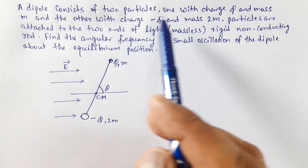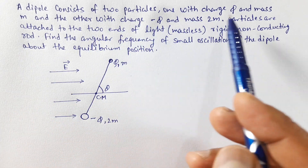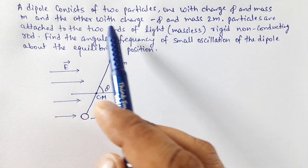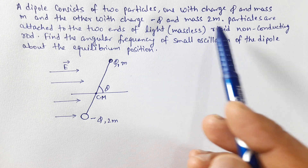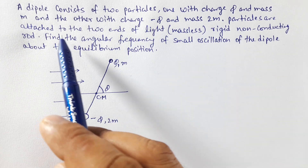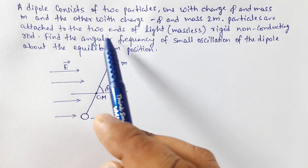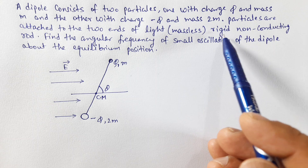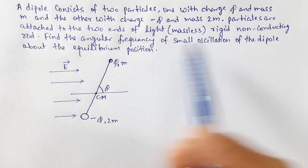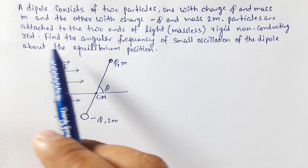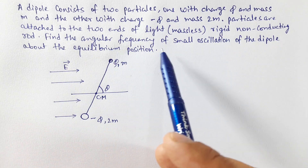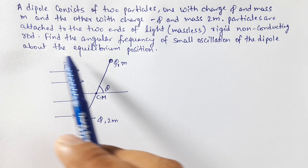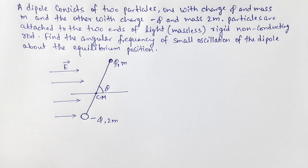A dipole consists of two particles, one with charge q and mass m, and the other with charge minus q and mass 2m. The particles are attached to the two ends of a light — that means massless — rigid, non-conducting rod. Find the angular frequency of small oscillation of the dipole about the equilibrium position.